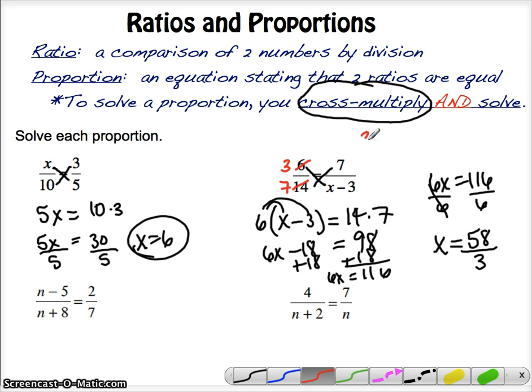So when you cross multiply, you get 3 times x minus 3 and 7 times 7. That's 49. Distribute here, 3x minus 9. Add the 9, add the 9, that's 3x equals 58, divide by 3, and you get your 58 thirds.